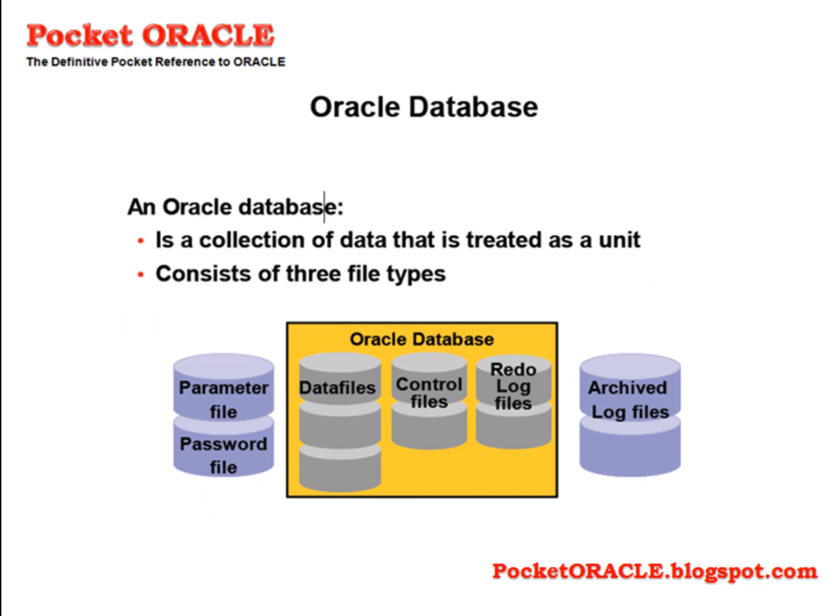Three file types make up an Oracle database, along with a few others that exist externally to the database and, strictly speaking, are optional. The required files are the control files, the online redo log files, and the data files. The external files are the initialization parameter file, the password file, and archive redo log files.